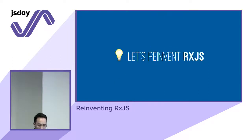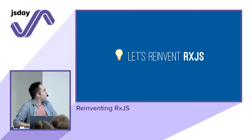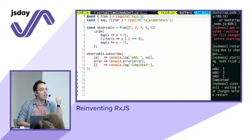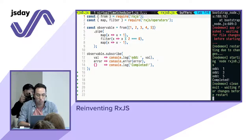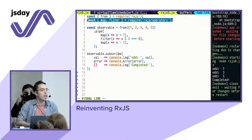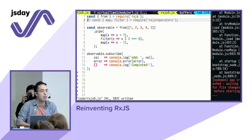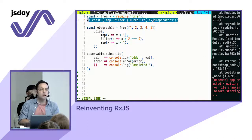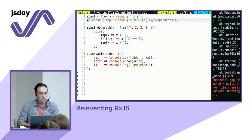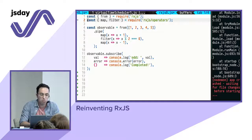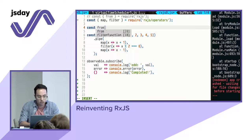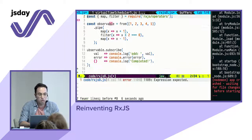Let's reinvent RxJS. On the left-hand side we have the same code I showed at the beginning. On the right-hand side I'm running the file live. So what we're going to do is comment out `from` and create our own `from` function. `from` is a function that accepts one parameter — the initial data — and returns an object that contains a `.pipe` method, which contains pipe functions, which in turn return something that contains a `.subscribe` method.